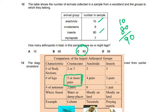Remember: crustaceans have two pairs of antennae, arachnids have no antennae, and insects have one pair of antennae. There is a lot of rote learning required for this topic.